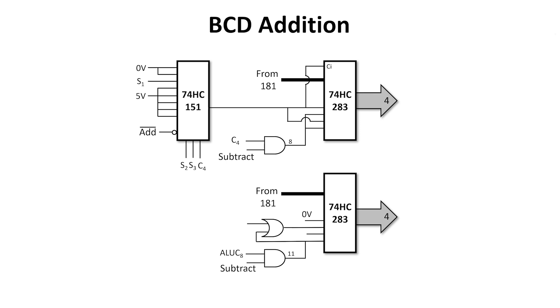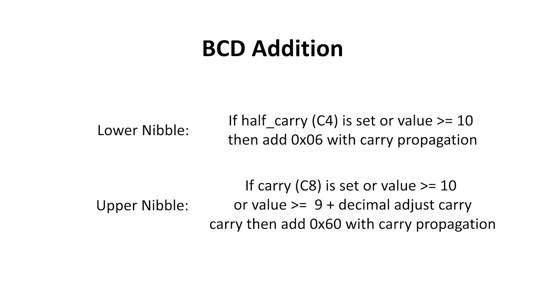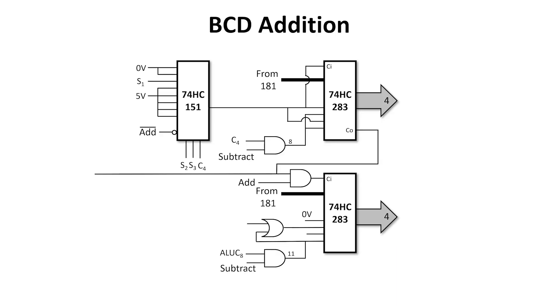If the carry out from the ALU is set, or the value is greater than or equal to 10, then we need to add 6 to the upper nibble. But there's also another case where the output from the ALU is 9, but we get a carry input from the lower decimal adjust adder. To handle this extra case, I'm going to use another 74HC151 in a slightly different configuration.